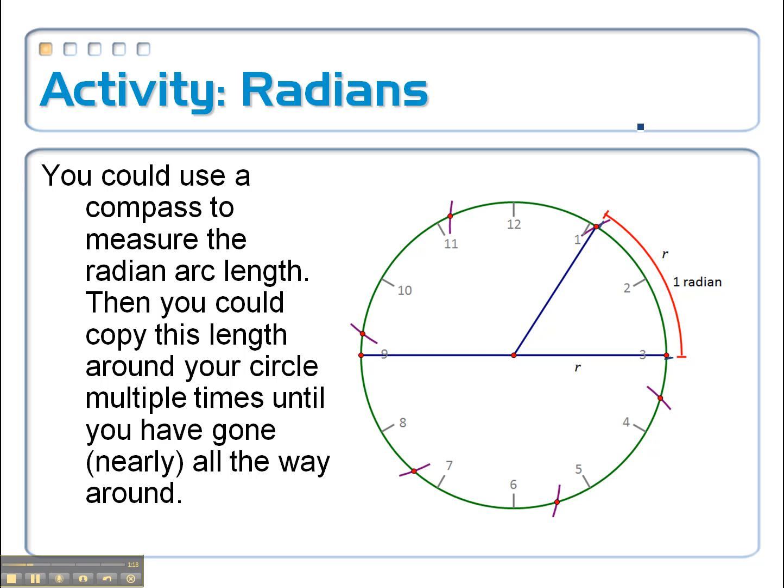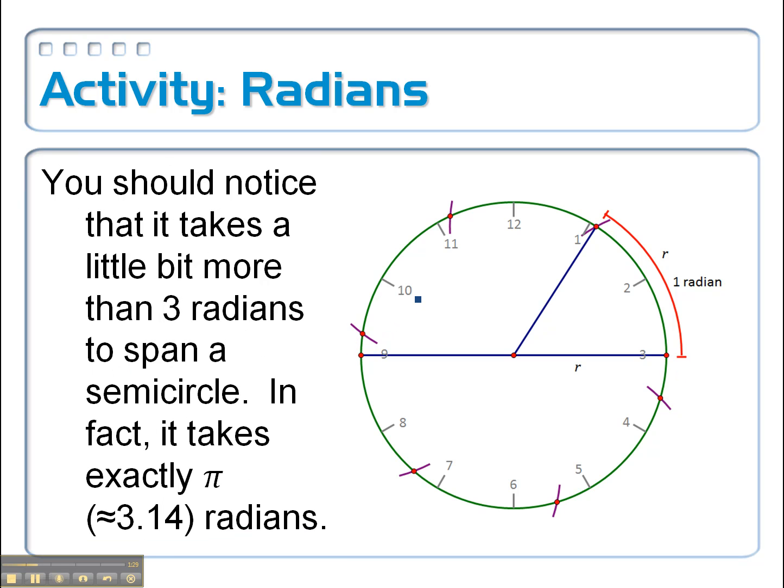But then I've got this little extra piece left over, and I've got a little extra piece left over from the half over here on the other side. So you should notice it takes a little bit more than 3 radians. So here's 3 radians, here's a little bit more.